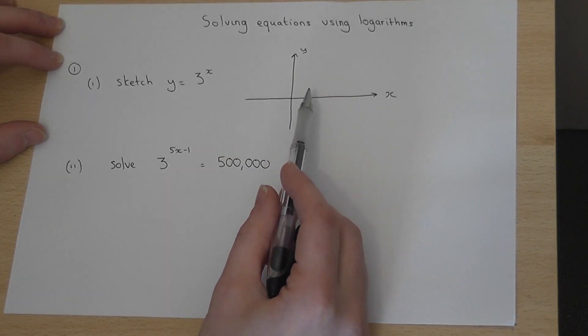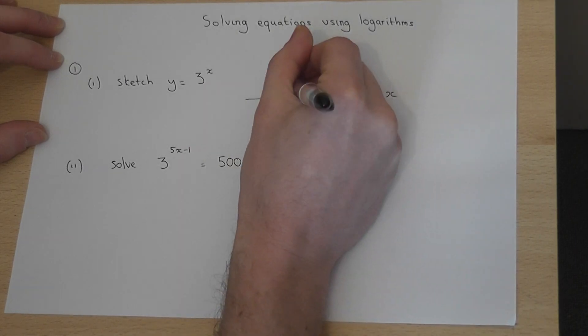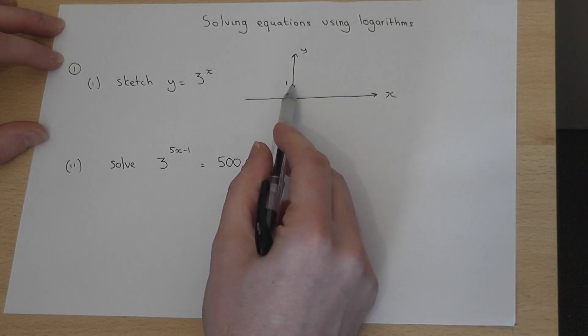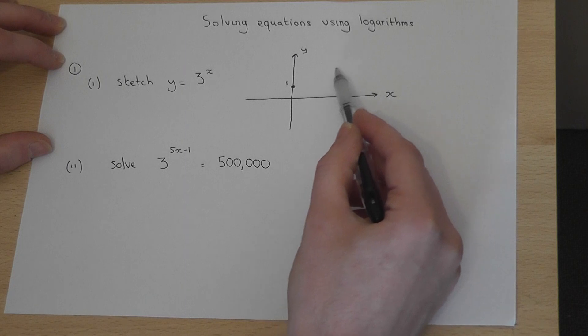If we work out 3 to the power of 0, the answer is 1. So the graph must pass through 1 on the y-axis. However, as x increases, so the graph increases.